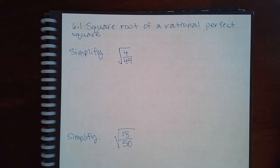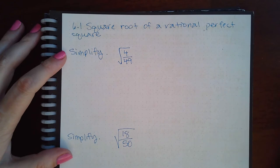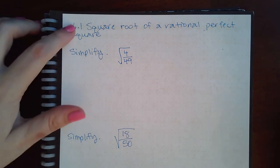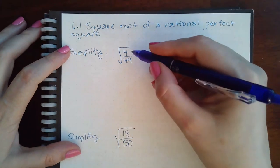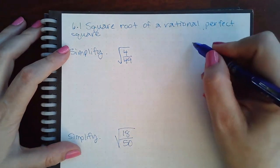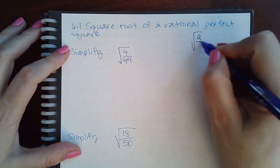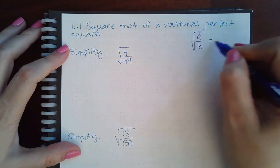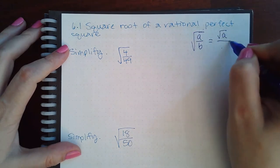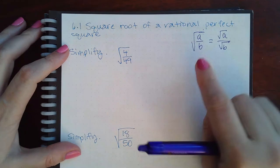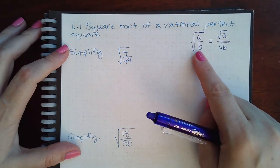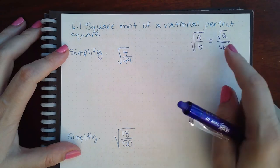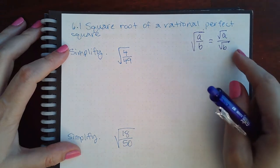In this section we're going to cover 6.1, square root of a rational perfect square. We have a rule that says for any real numbers a and b, this is an equivalent statement: whether you have the square root of the entire fraction or the square root of the numerators and denominators.